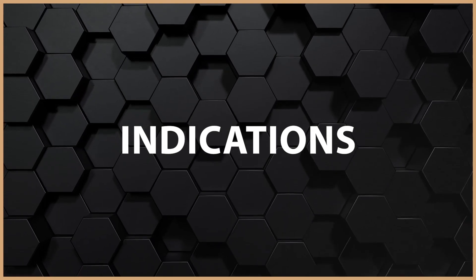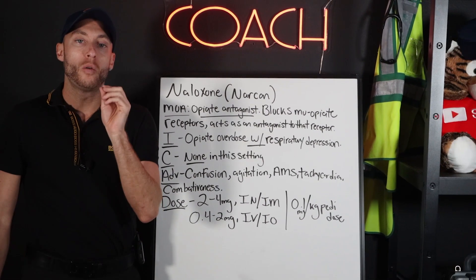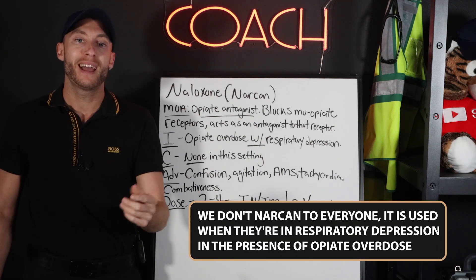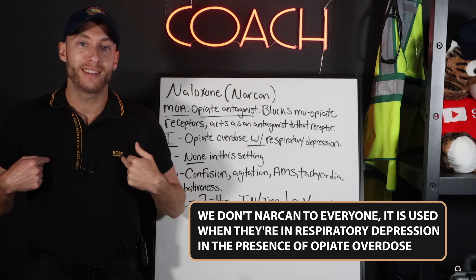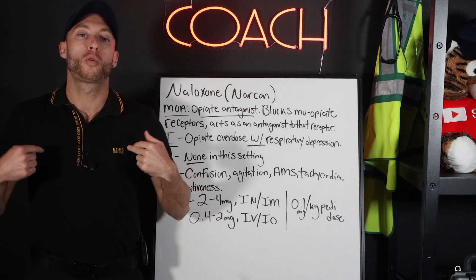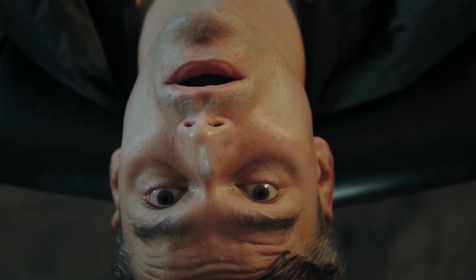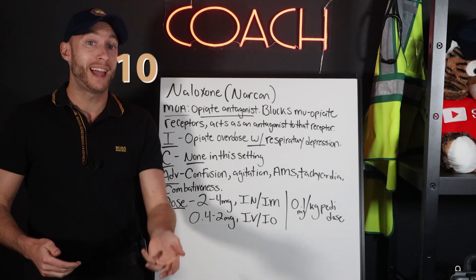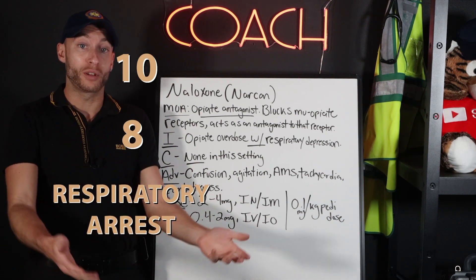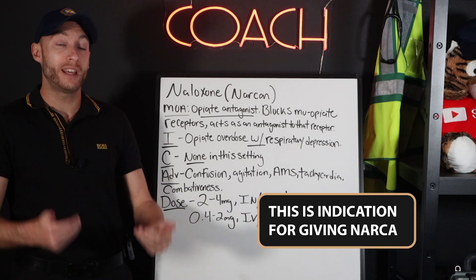This is very key. Next part is indications — when do we actually give it? We give Narcan when somebody takes an opiate and it is negatively affecting their respiratory drive, meaning their respiratory rate is too low. For an adult, that's under 12, like 10 or 8, or they're in respiratory arrest and they're not currently breathing. This is the indication for giving Narcan.